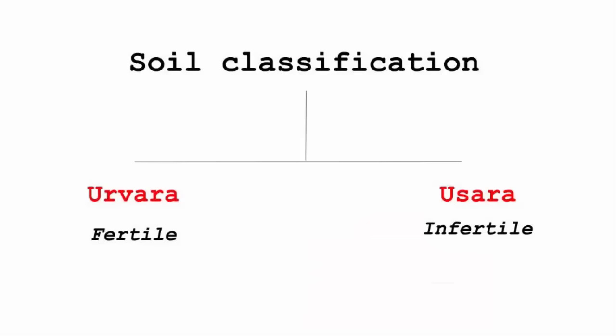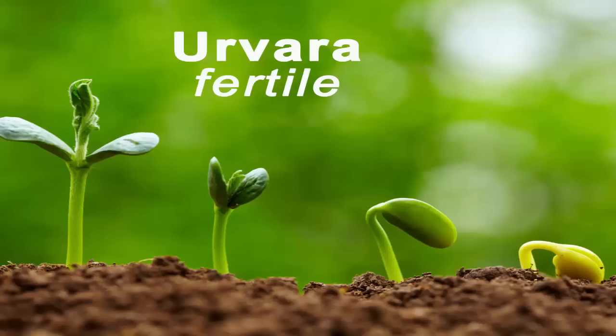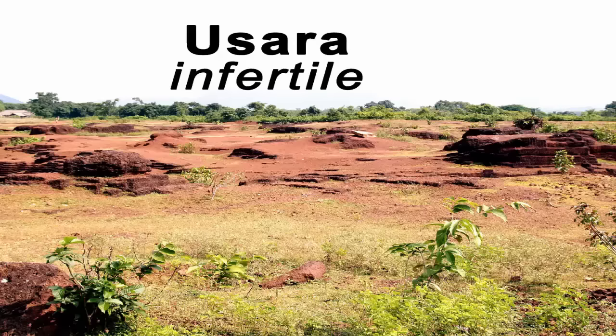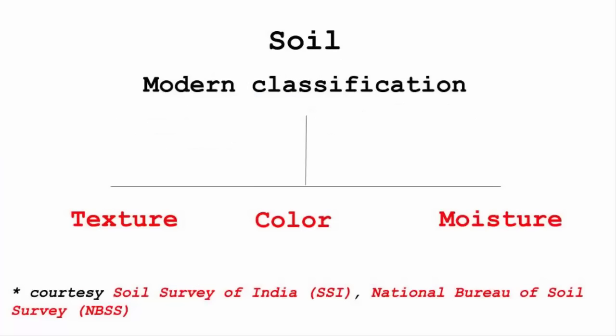In ancient times, soil was classified into two categories: the urwara and the usara. Urwara means fertile and usara is the opposite — infertile. But today we live in a multi-dimensional world, hence the classification of soil has gone much beyond in terms of texture, color and moisture. This was made possible due to institutions like the Soil Survey of India and the National Bureau of Soil Survey.